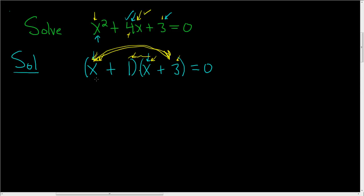Okay, now we have a product that's equal to 0, so we can set each factor equal to 0. So x plus 1 is equal to 0, or x plus 3 is equal to 0.